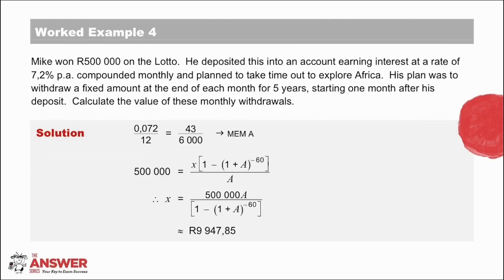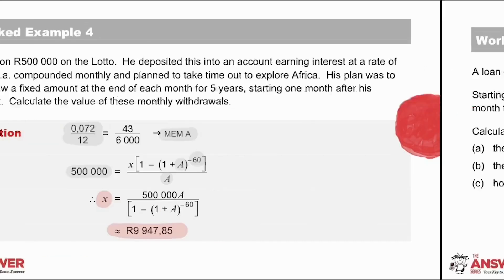Here we confirm which value goes where in the formula. We use the memory for the monthly interest rate. The present value is R500,000 — the value of Mike's winnings. He plans to take monthly withdrawals for 5 years, so 60 withdrawals. To solve for X, multiply the R500,000 by the bracket and divide by the denominator bracket.